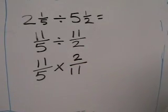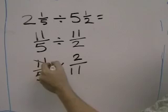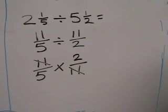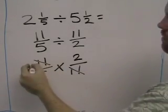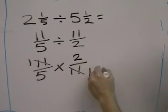The next step is to see if anything can be cross-cancelled. And sure enough, 11 and 11 are both divisible by 11. So 11 divided by 11 is 1. 11 divided by 11 is 1.